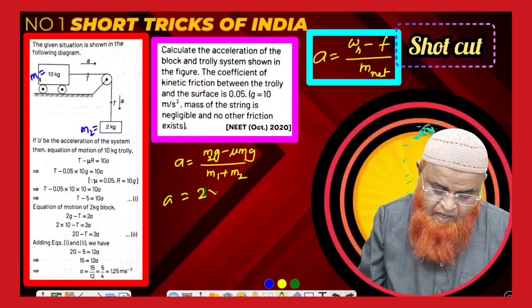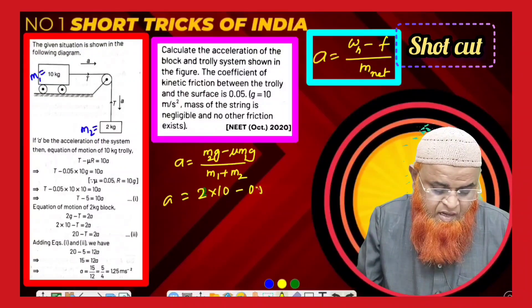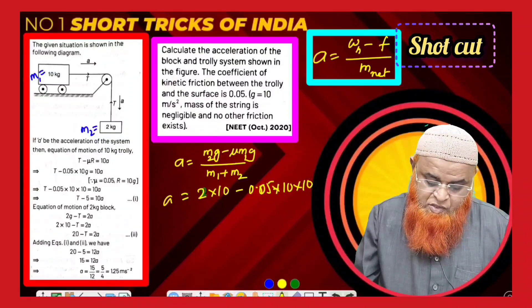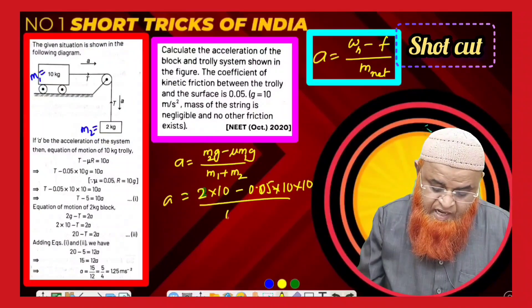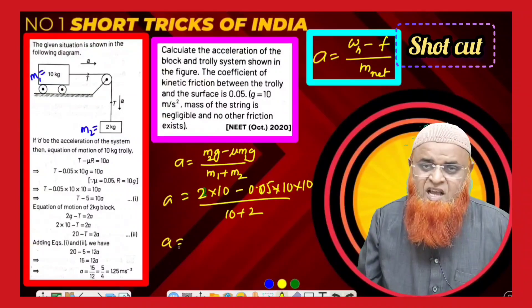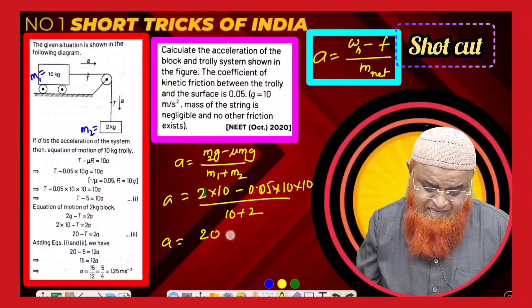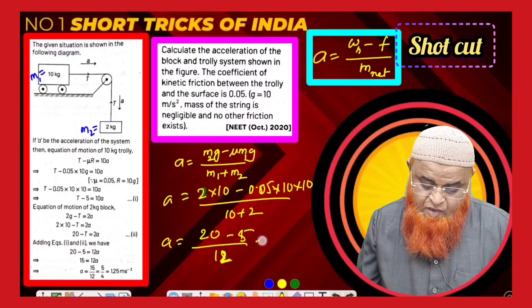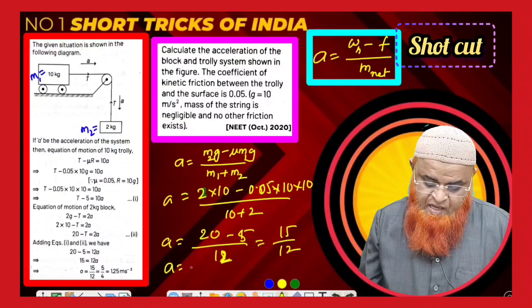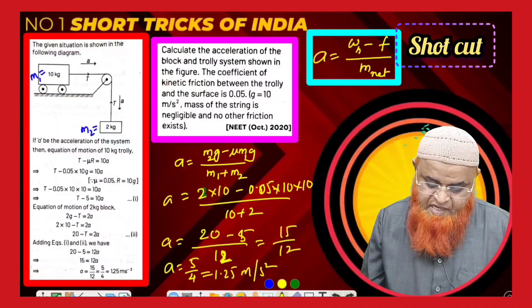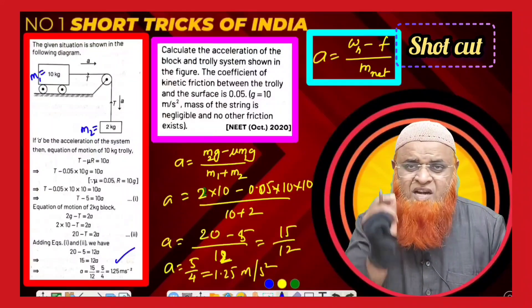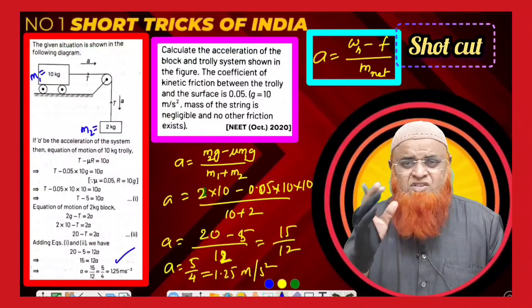Substituting: m2 = 2, g = 10, μ = 0.05, m1 = 10. So acceleration = (2×10 − 0.05×10×10) / (10+2) = (20 − 5) / 12 = 15/12 = 5/4 = 1.25 m/s². This single-step formula solves the problem without any free body diagrams.